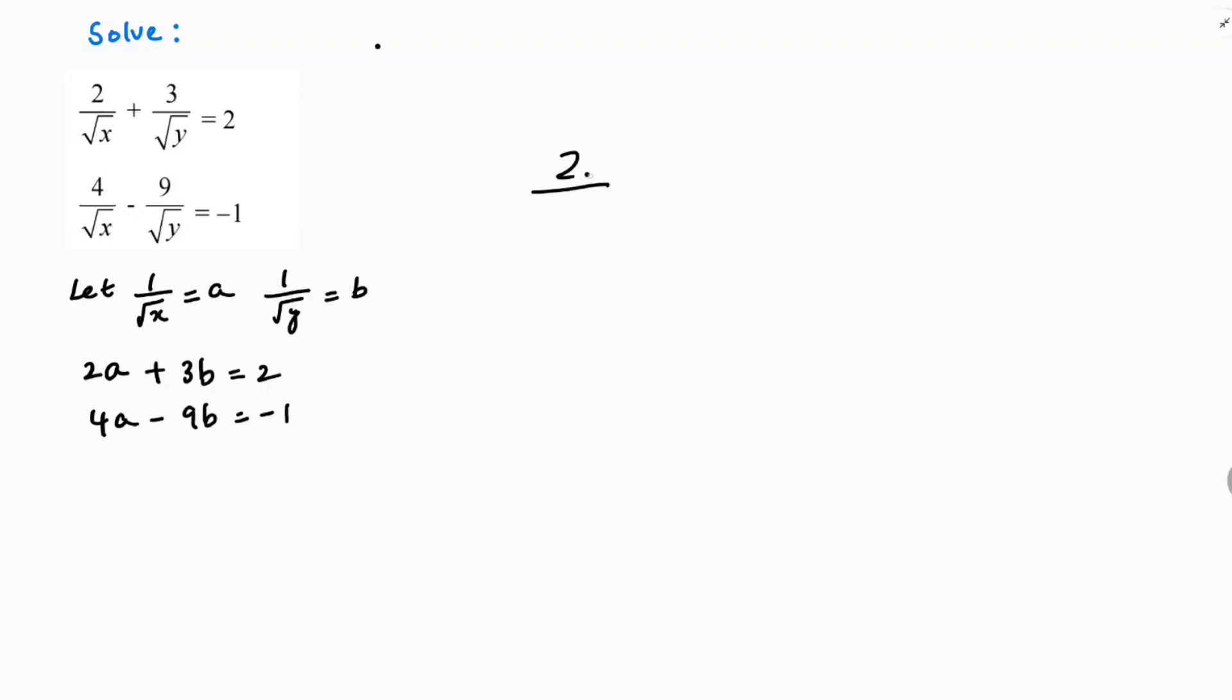See, if I want I'll explain here. 2 by root x plus 3 by root y is 2. So what I'm saying, 2 by root x you can write as 2 times 1 by root x. 3 times 1 by root y you can write like this. So 1 by root x we are considering it as a, so this is 2a. This will become like 3b. So in this way we can write 2a plus 3b, and the second equation will be 4a minus 9b equals minus 1.